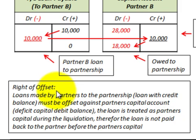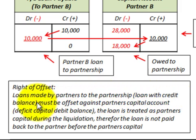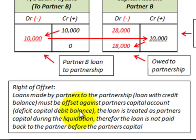So what is this right of offset? The right of offset applies to loans made by the partners to the partnership. A loan with a credit balance — that is, a loan payable to the partner — must be offset against the partner's capital account if there is a deficit, meaning the partner owes money to the partnership. The loan is treated as the partner's capital during liquidation and is transferred from loans payable into their capital account.